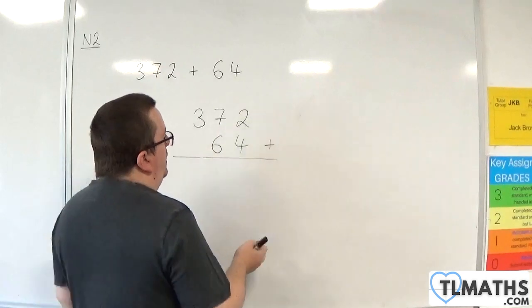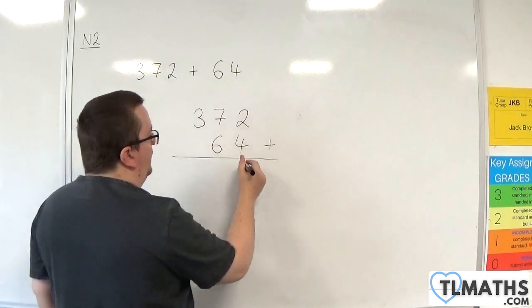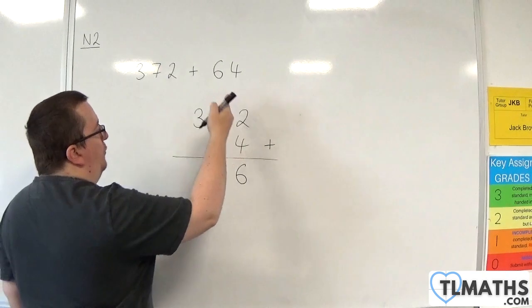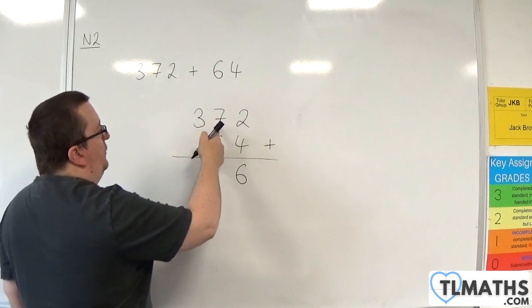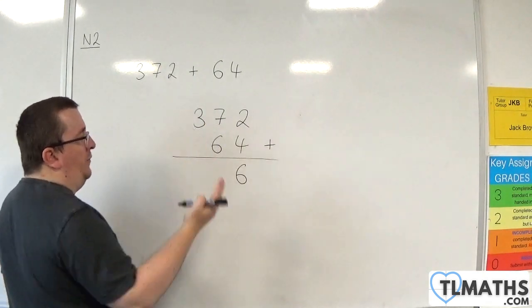So the way that this works is that we add the 2 and the 4 together to make 6. Then we move on to the tens column. We have 7 plus 6, which is 13.